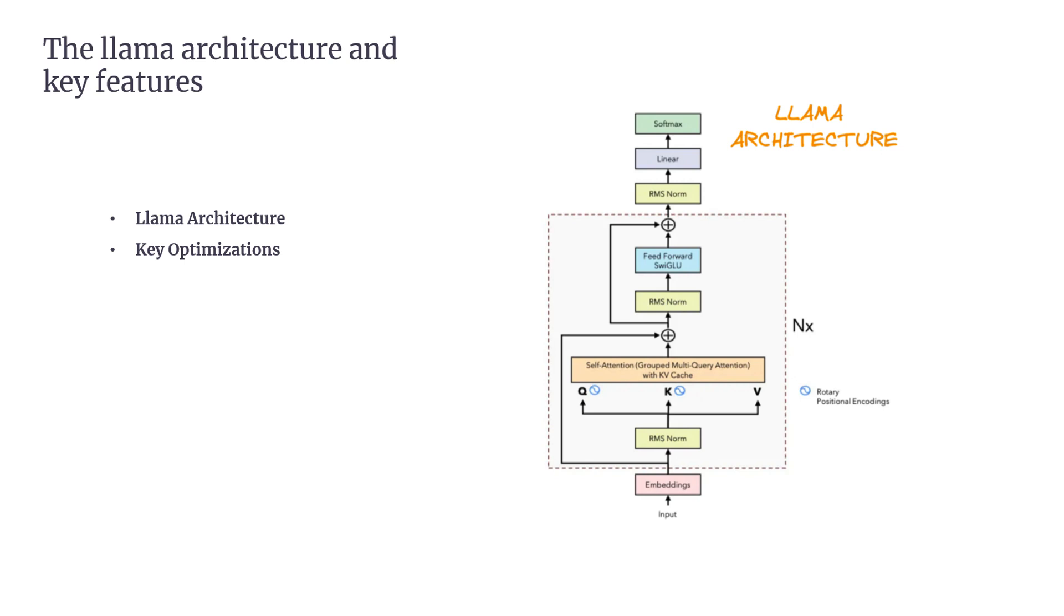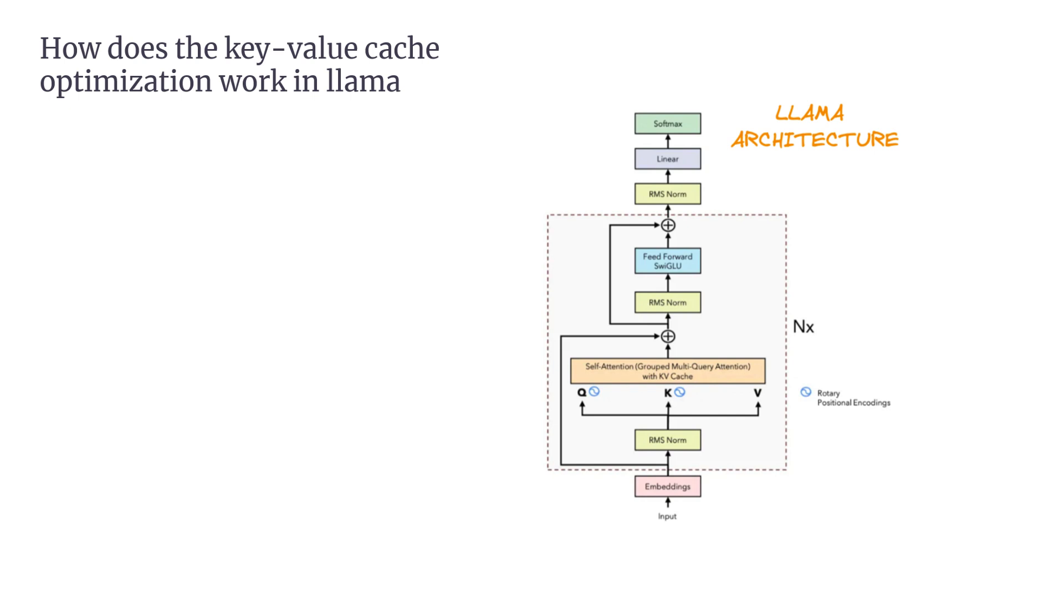In summary, the LLAMA architecture builds upon the classic transformer model but incorporates key modifications to improve both performance and efficiency. From Grouped Multi-Query Attention (GQA) to Rotary Positional Embeddings (RoPE), each change is aimed at making LLAMA more powerful and scalable. Now let's dive into some of the key optimizations behind the LLAMA models, which are designed to be efficient while maintaining strong performance across a wide variety of NLP tasks.